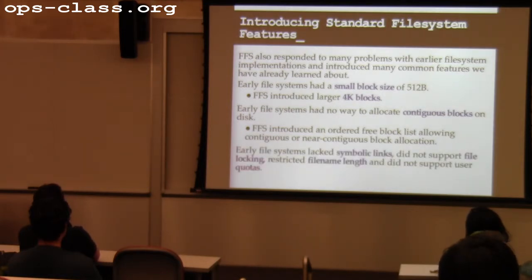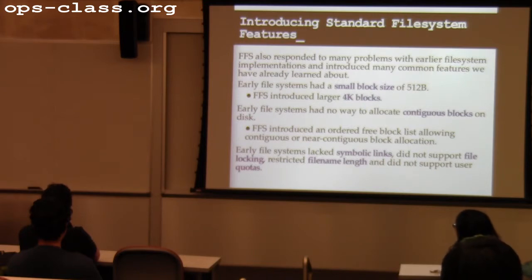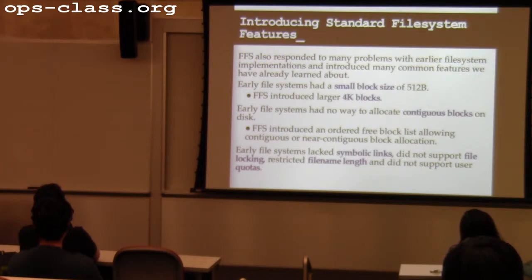FFS also introduced a whole laundry list of features: symbolic links, file locking — the idea of providing exclusive access to a file to a particular process — unlimited lengths for file names, and per-user quotas on file systems. It's bizarre that in 2013 we still have email addresses based on 8-character Unix username restrictions, even though at least you can name your files with your full name.